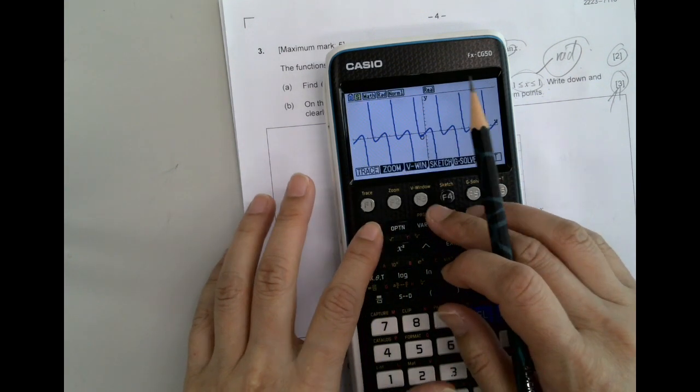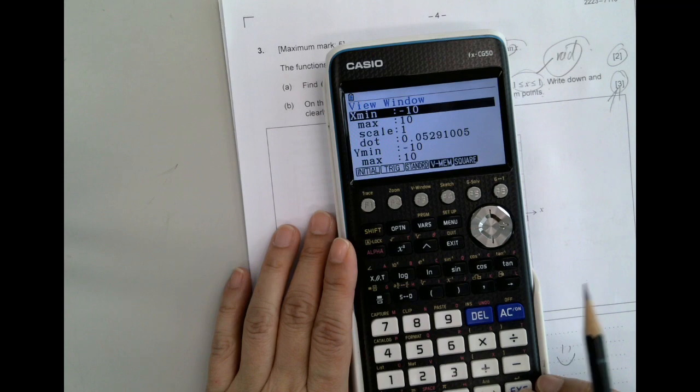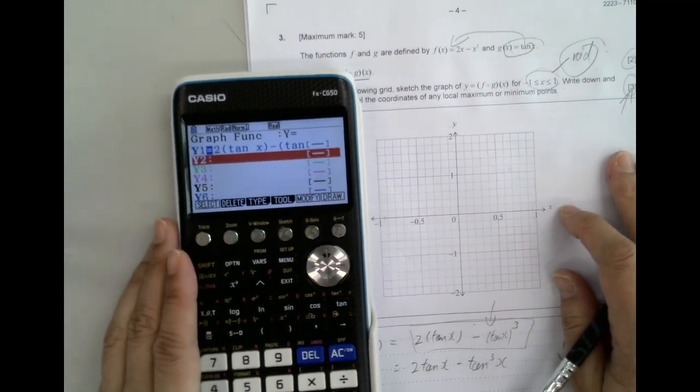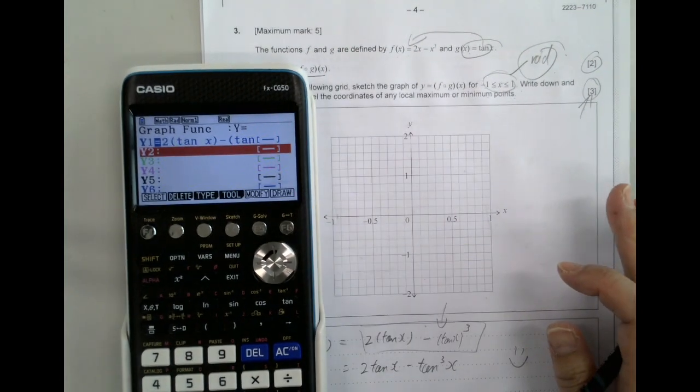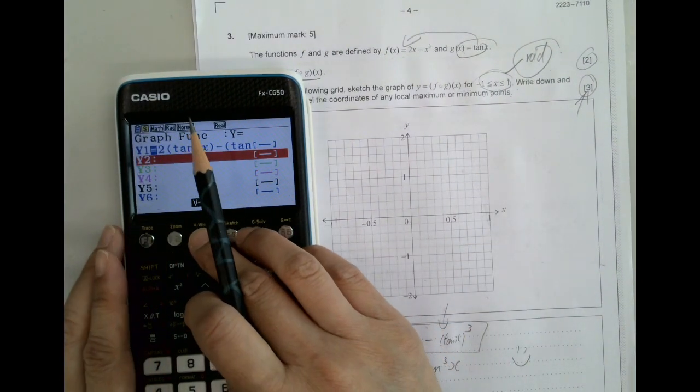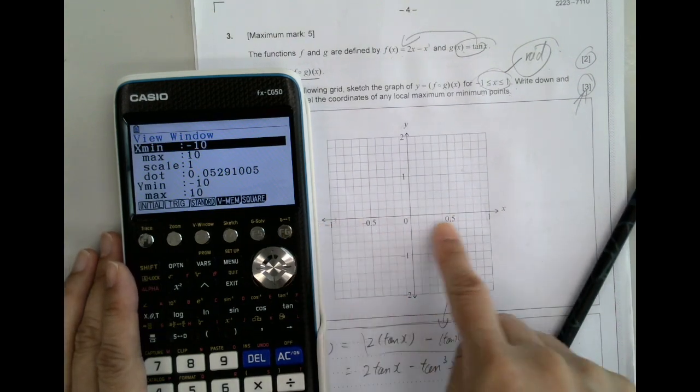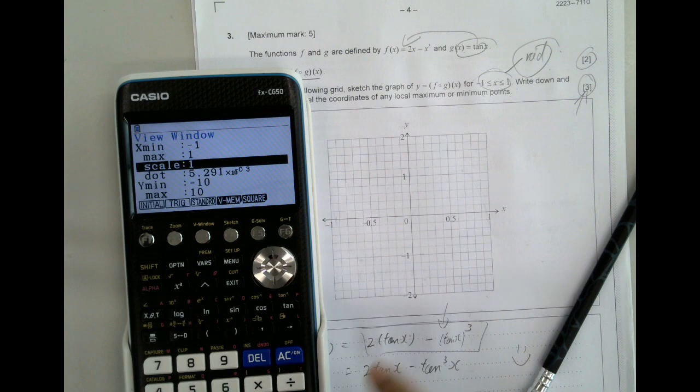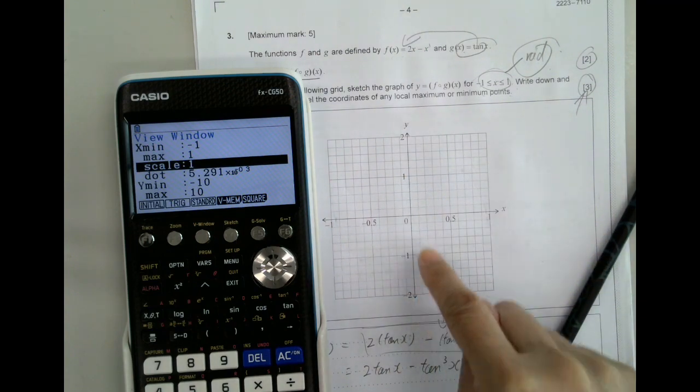All right, this is a weird one because this is our normal window there, but then we got a graph here. So we could actually copy whatever we have there. So here we go, we copy that. So we have to go to window, change it to domain from negative one to one, and then the range is negative two to two.